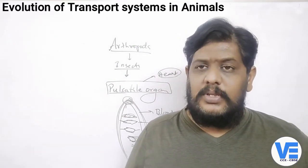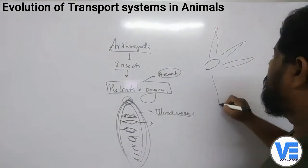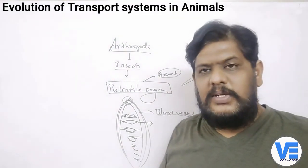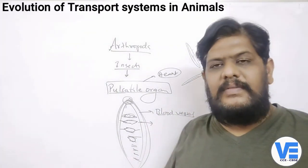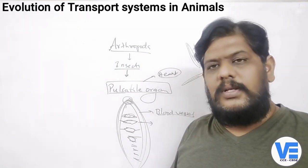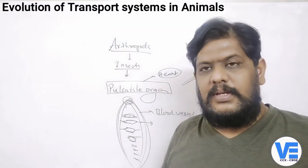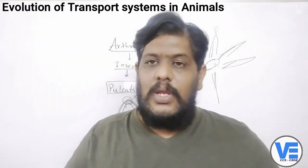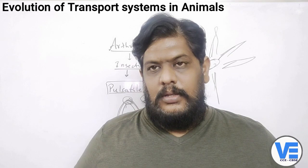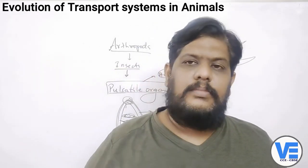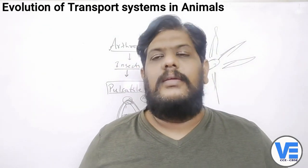In Mollusca, the circulatory system is similar to Arthropoda — open circulatory system. In Echinodermata it is completely different: they have ring-like canals and radial canals. They do not have blood; water comes inside with nutrients and is circulated through the different canals of the body. There is no heart or blood vessels. Tomorrow we will discuss vertebrates and also coagulation of blood, so don't miss the class. Thank you and have a great day.